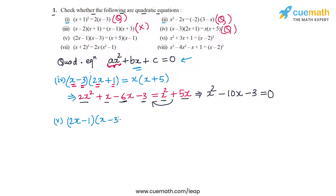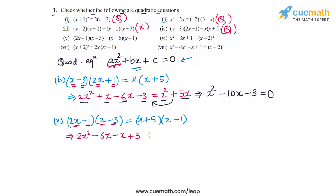In part five, the equation is (2x − 1)(x − 3) = (x + 5)(x − 1). Expanding the left side: 2x² − 6x − x + 3. Expanding the right side: x² − x + 5x − 5. We have 2x² on the left and x² on the right. Rearranging, we get x² on the left side, then −6x − x = −7x, and on the right −x + 5x = 4x.